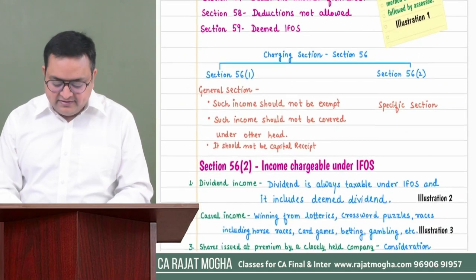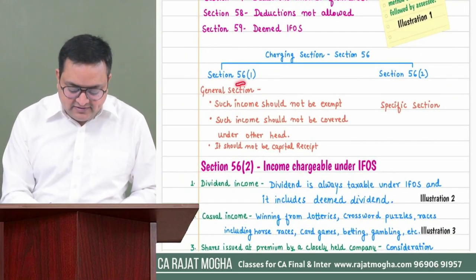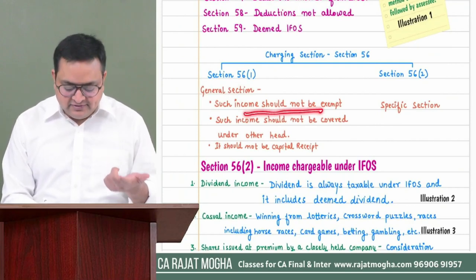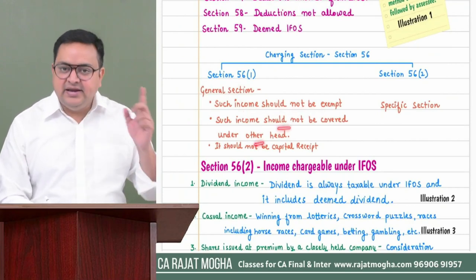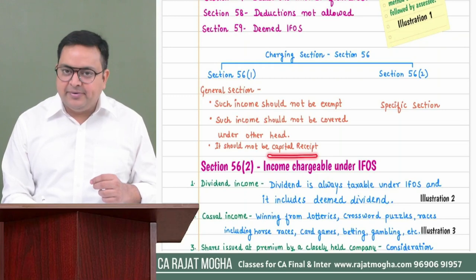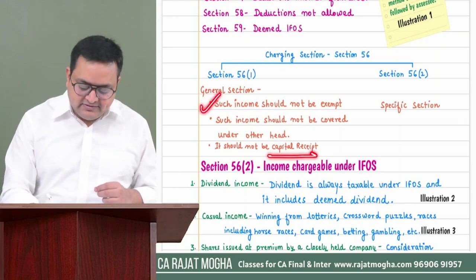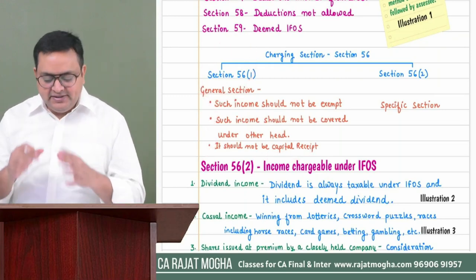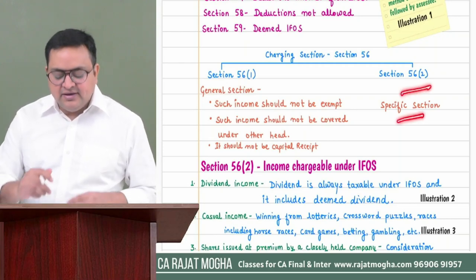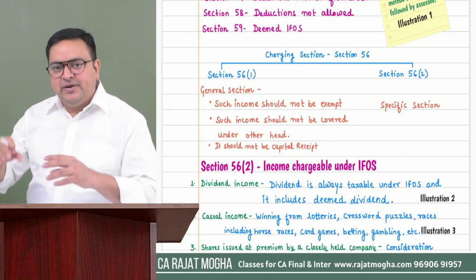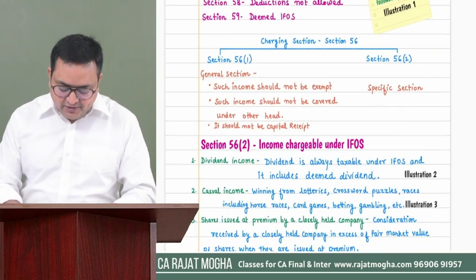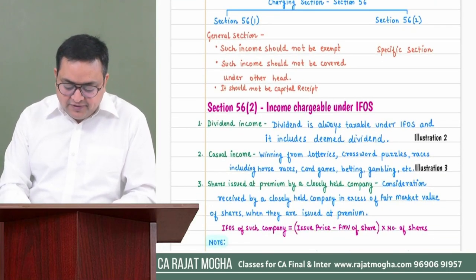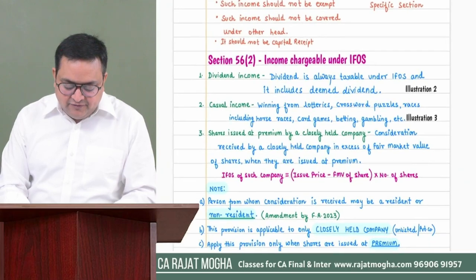Section 56(1) says it is a general charging section. Such income should not be exempt, should not be covered under any other head, and should not be capital in nature. If all these conditions are satisfied, it will be covered under IFOS. But there are certain incomes which are specific and automatically come under IFOS under Section 56(2). We have to read what types of income are mentioned there.